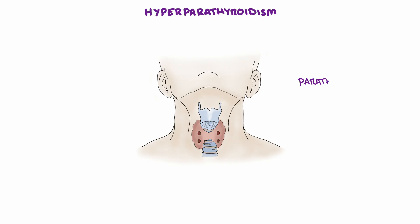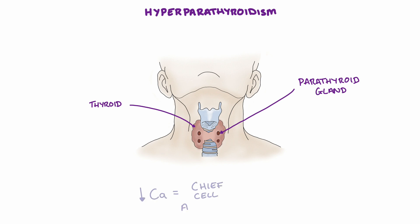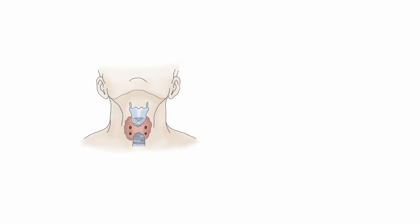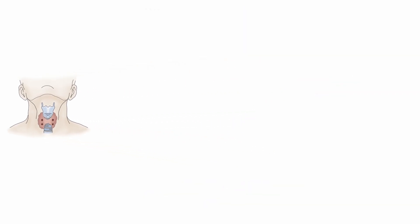There are four parathyroid glands and they are located in the corners of the thyroid gland, which is found in the neck. Low serum calcium levels activate chief cells inside the parathyroid gland to release parathyroid hormone. Once released, the parathyroid hormone has effects in the kidneys and the bones.